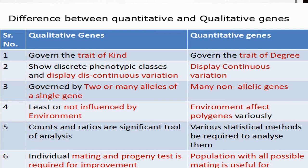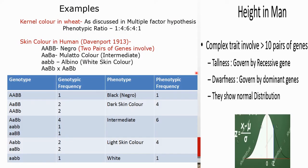Some examples of quantitative inheritance: kernel color in wheat, as discussed in the multiple factor hypothesis, shows a phenotypic ratio of 1:4:6:4:1. Another example is skin color in humans — depending on genotype, it could be mulatto color, an intermediate form, or albino white skin color. A table can be used to show the genotype, genotypic frequency, phenotype, and phenotypic frequency.